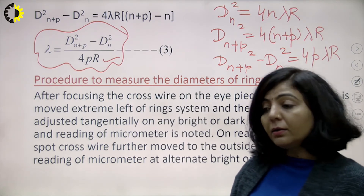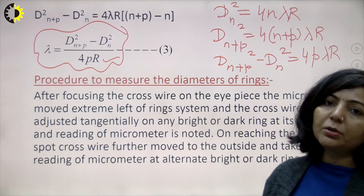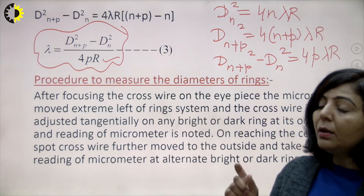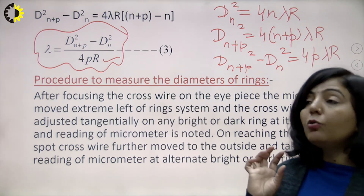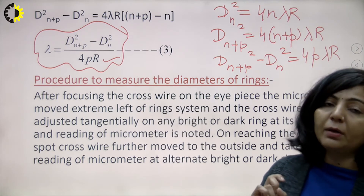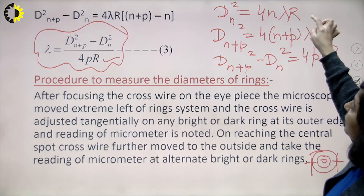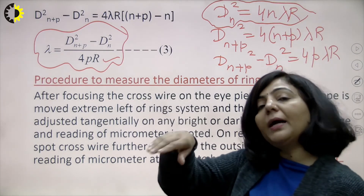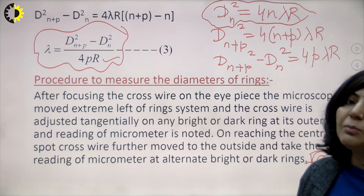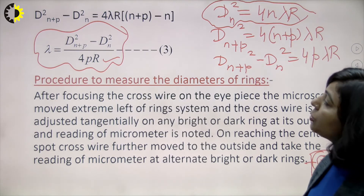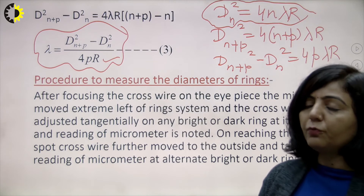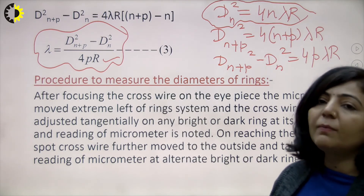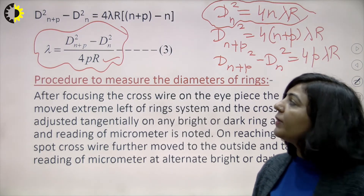Note that the radius of curvature is normally of the order of a few hundred centimeters because R must be large. From the formula, the diameter of the rings depends on R — the greater the value of R, the greater the diameter of the rings and the more clearly they can be observed. Once R is known, substitute it into equation (3) to find the wavelength of the unknown source of light.